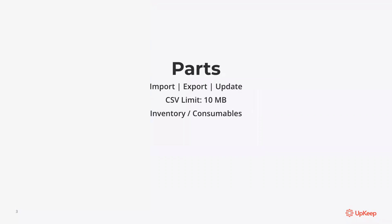On the parts tab you have the option to import new parts into the system for the first time. You also have the option to export your currently existing parts list, as well as update your currently existing parts list. So if you need to update the name or the location in bulk, for example, you have the option to do that in bulk as well. But in today's video we will just show you how to import new parts into the system for the first time.